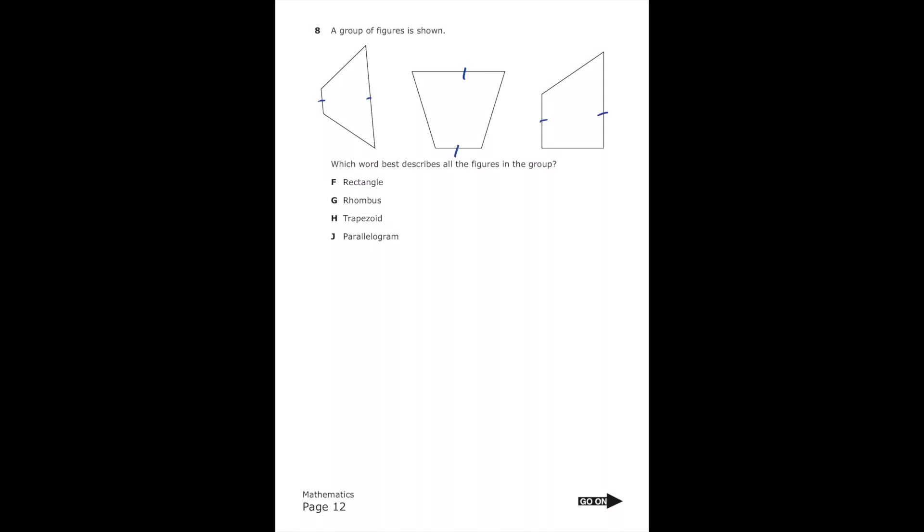So it's definitely not going to be a rectangle, because they don't have right angles. It's not going to be a rhombus. Trapezoid, I'm thinking that's probably it. And then parallelogram would have to have two sets of parallel sides. These only have one. So I'm going to go with letter H, trapezoid.